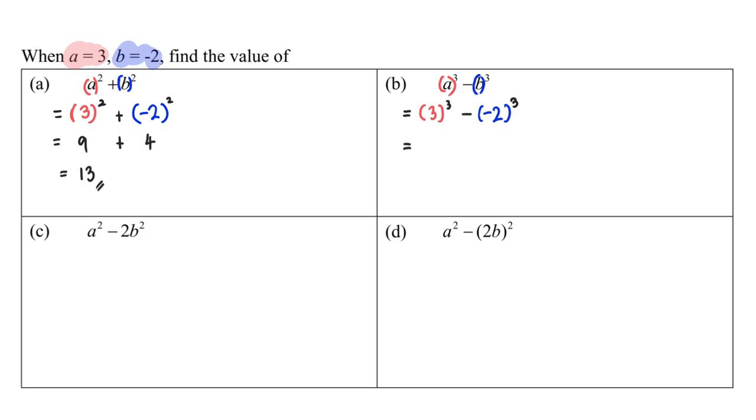And again, please show every single step. 3 to the power of 3 is 27 minus negative 2 to the power of 3, which is negative 8. When we have minus a negative value, this becomes positive 8, and the final answer is 35.